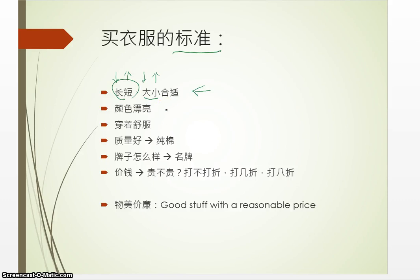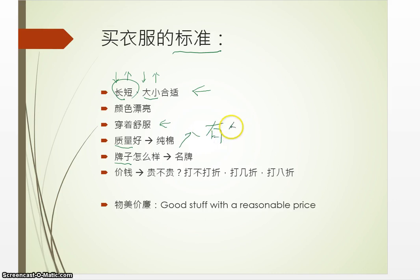颜色漂亮不漂亮？颜色 means color. 穿着舒服不舒服？Comfort. 质量 is a new word — 质 means quality. 牌子 means brand. 有名的牌子,有名的就是 a name brand. 还有就是价钱 (price). 所以我们可以问:贵不贵？打不打折？打几折,还是打八折？